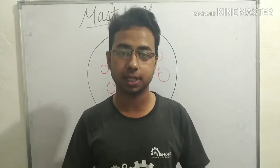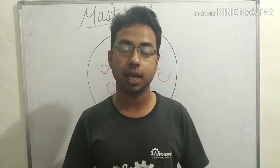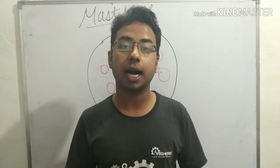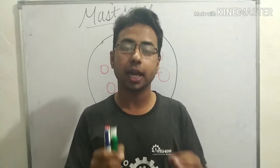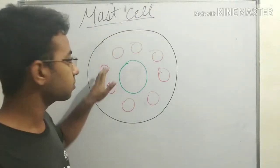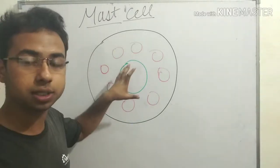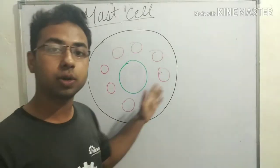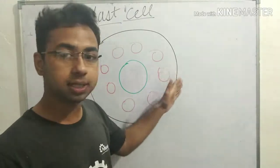What are mast cells? Mast cells are a type of white blood cells which are granulocytes. What does granulocytes mean? Granulocytes means they contain granules in their cell — that's why they are known as granulocytes. So mast cells are the type of white blood cells that contain granules in the cell structure.